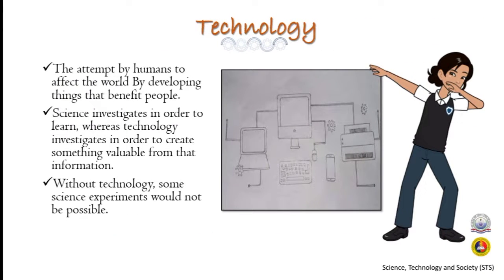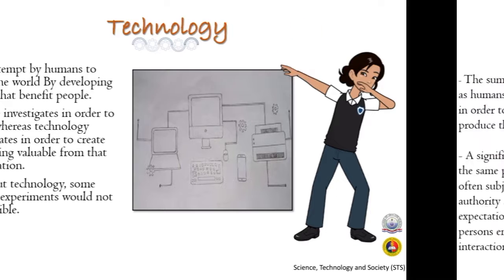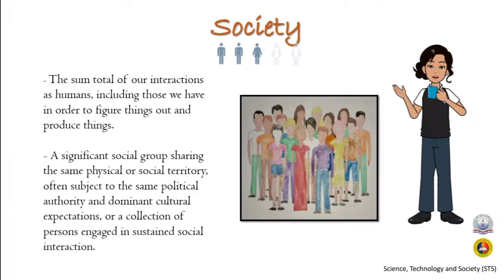Technology is the attempt by humans to affect the world by developing things that benefit people. Science investigates in order to learn, whereas technology investigates in order to create something valuable from that information. Without technology, some science experiments would not be possible. And lastly, society is the sum total of our interactions as humans, including those we have in order to figure things out and produce things.